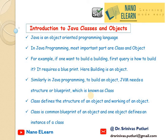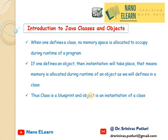A class defines the structure and working of an object. It is a common blueprint, and one object defines an instance of a class. When one defines a class, no memory space is allocated during the runtime of a program. If one defines an object, then instantiation takes place — meaning memory is allocated during runtime as defined in the class. Thus, a class is a blueprint and an object is an instantiation of a class.